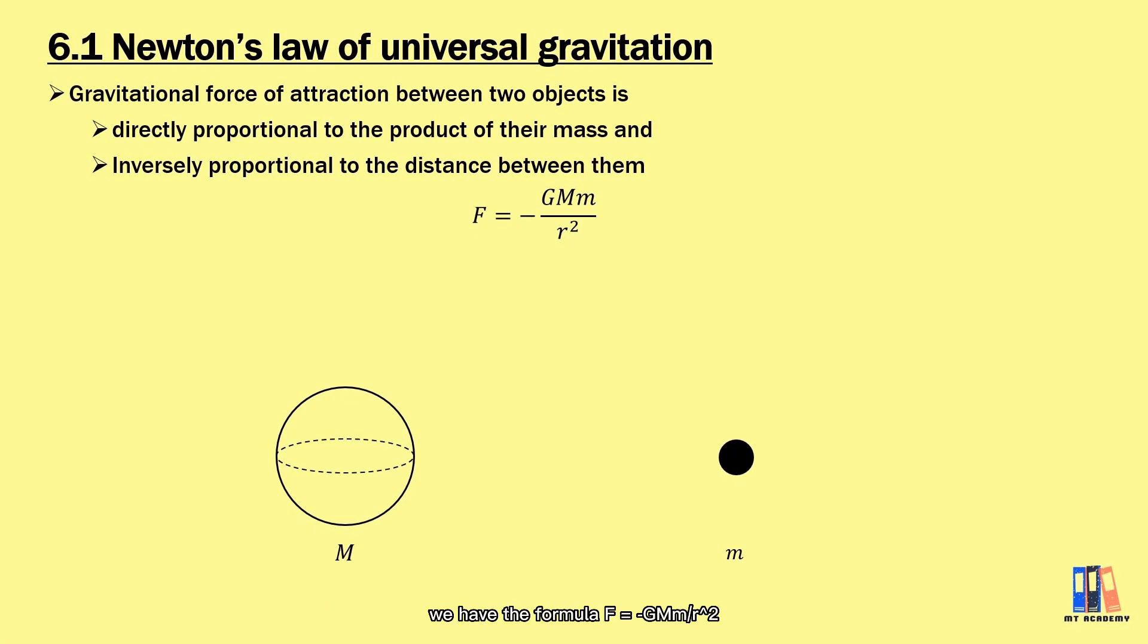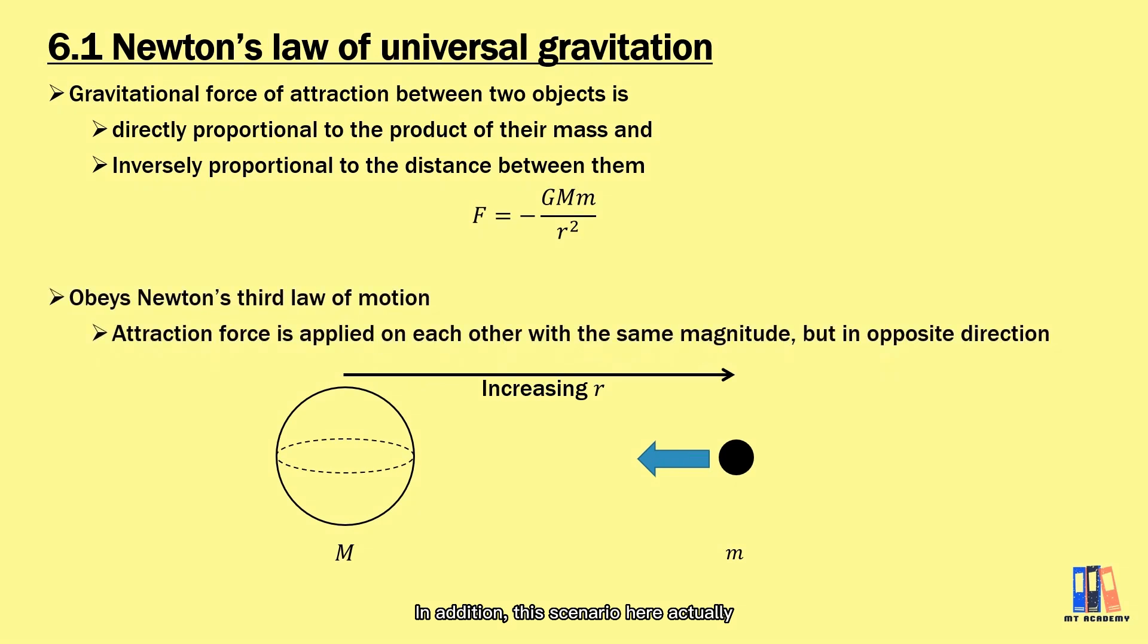From here, we have the formula F = -GMm/r², where the negative sign indicates that the direction of the force is opposite to the direction of increasing distance. In addition, this scenario obeys Newton's third law of motion that every action has a reaction force. The two objects apply attraction force on one another, and these two forces have equal magnitude but opposite direction.